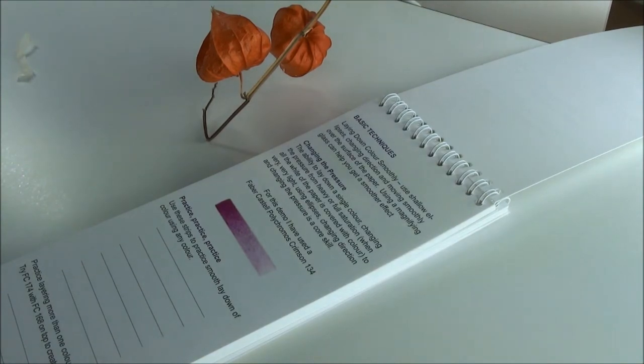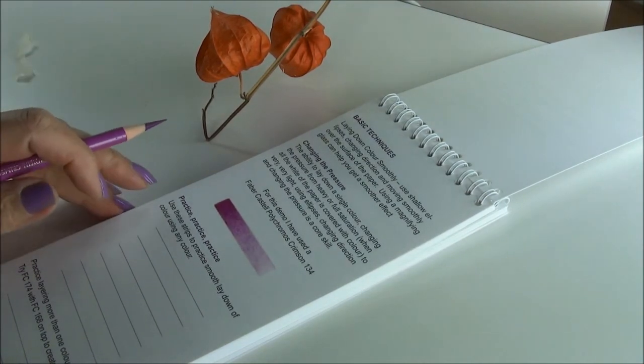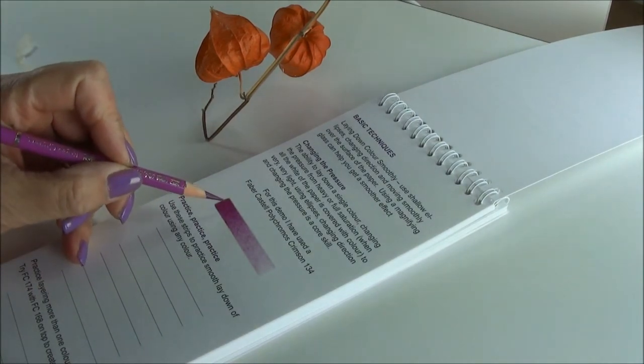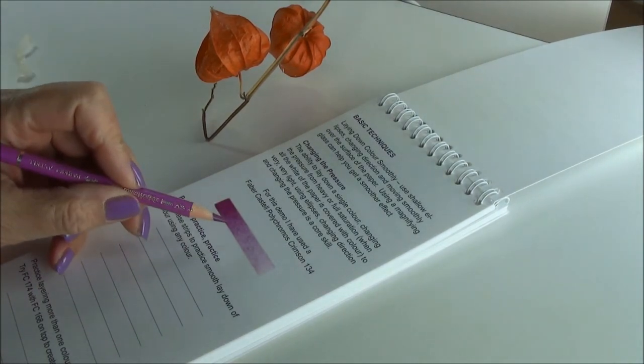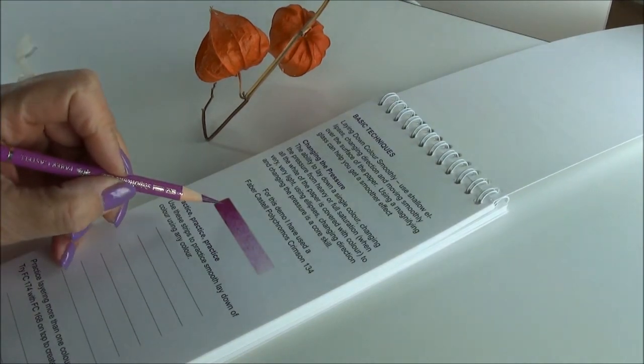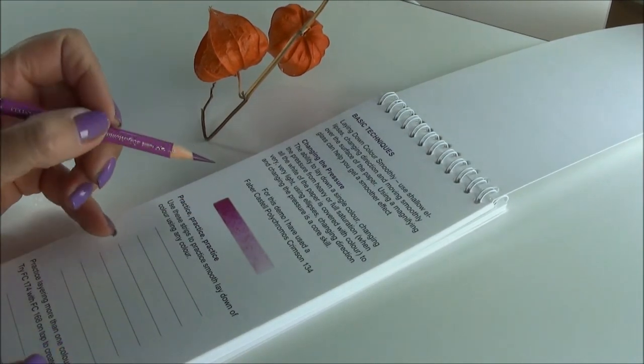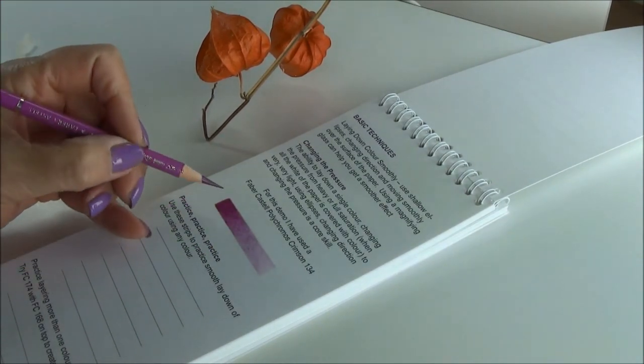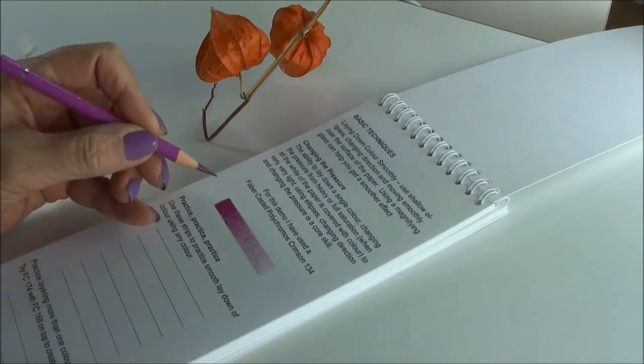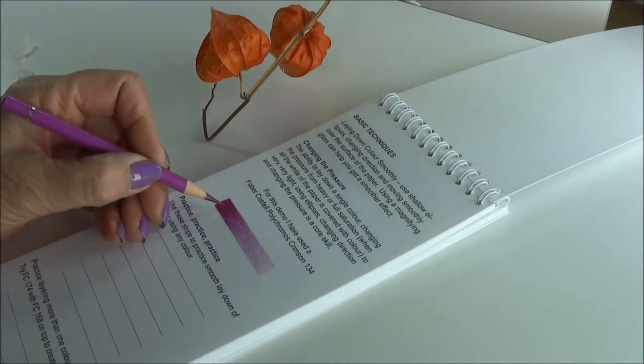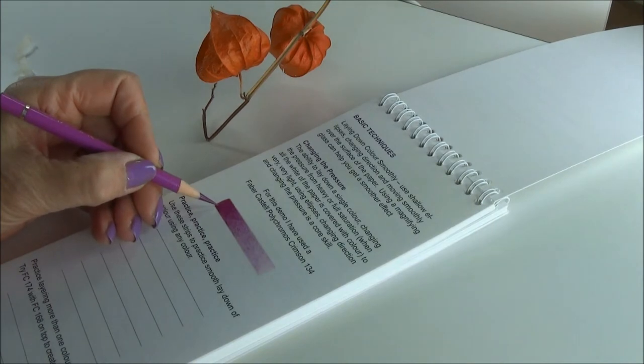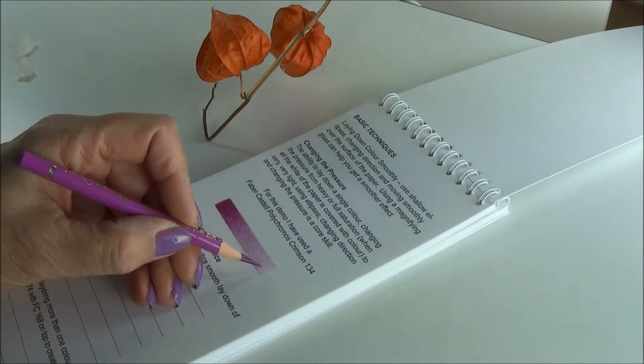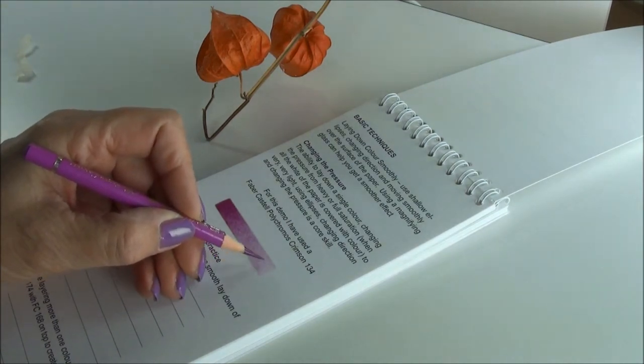After a brief introduction I describe some of the basic techniques. The core skill for colored pencil I think is the ability to lay down a smooth layer of color, varying your pressure where you want full saturation to light saturation. For this swatch I've used a Faber-Castell 134 and I've pressed very heavily on this end of the bar and gradually decreased the pressure until I've got as light as can be this end.